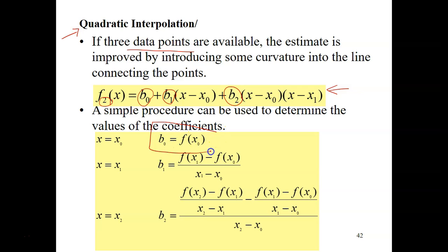It's here. Alright, so b0 equals to fx0. fx0 is just the first data point. And what is b1? This is the formula for b1. And what is b2? This is formula for b2.